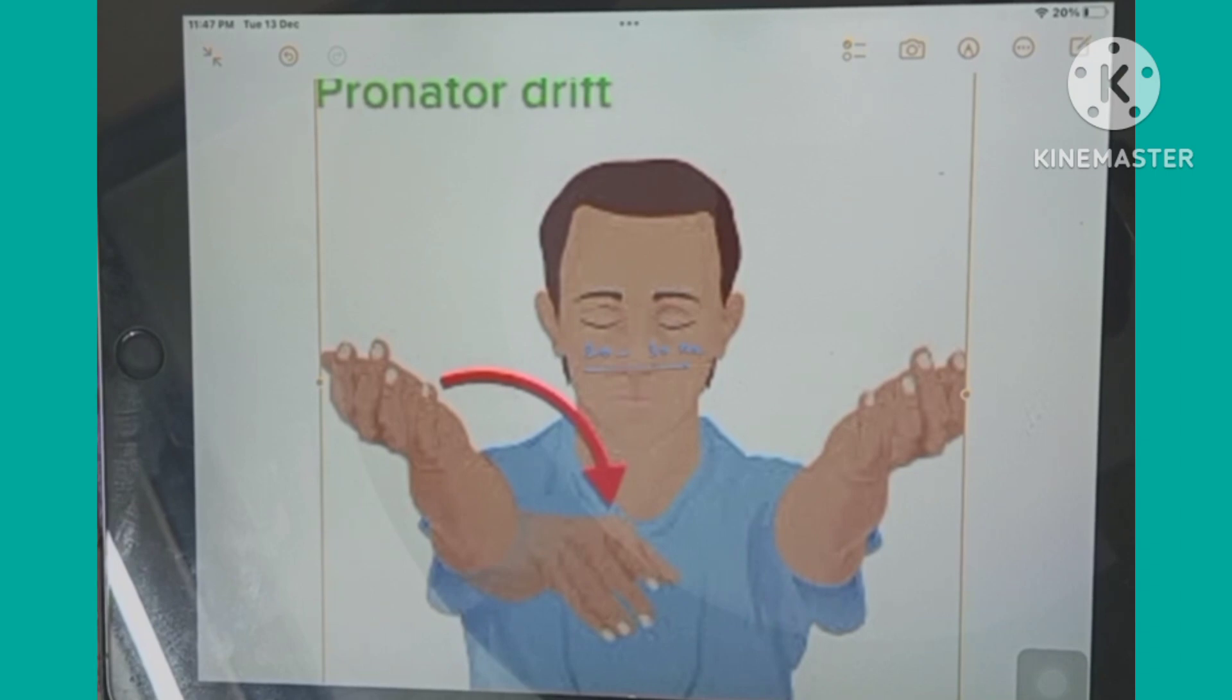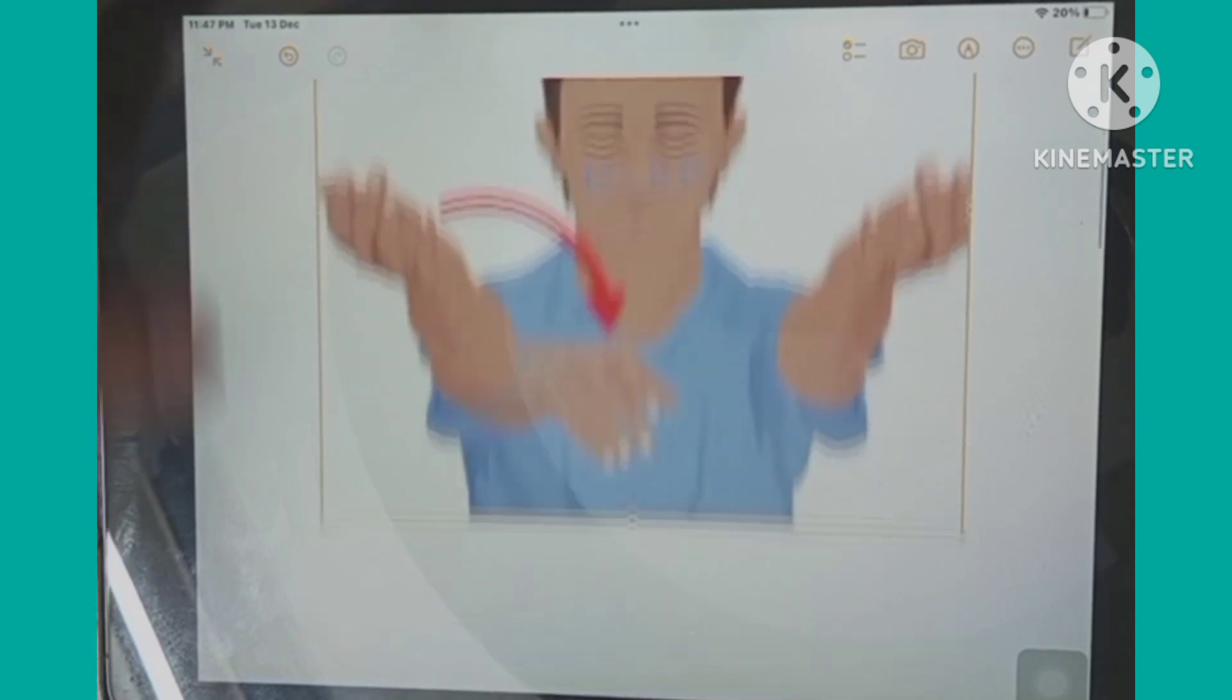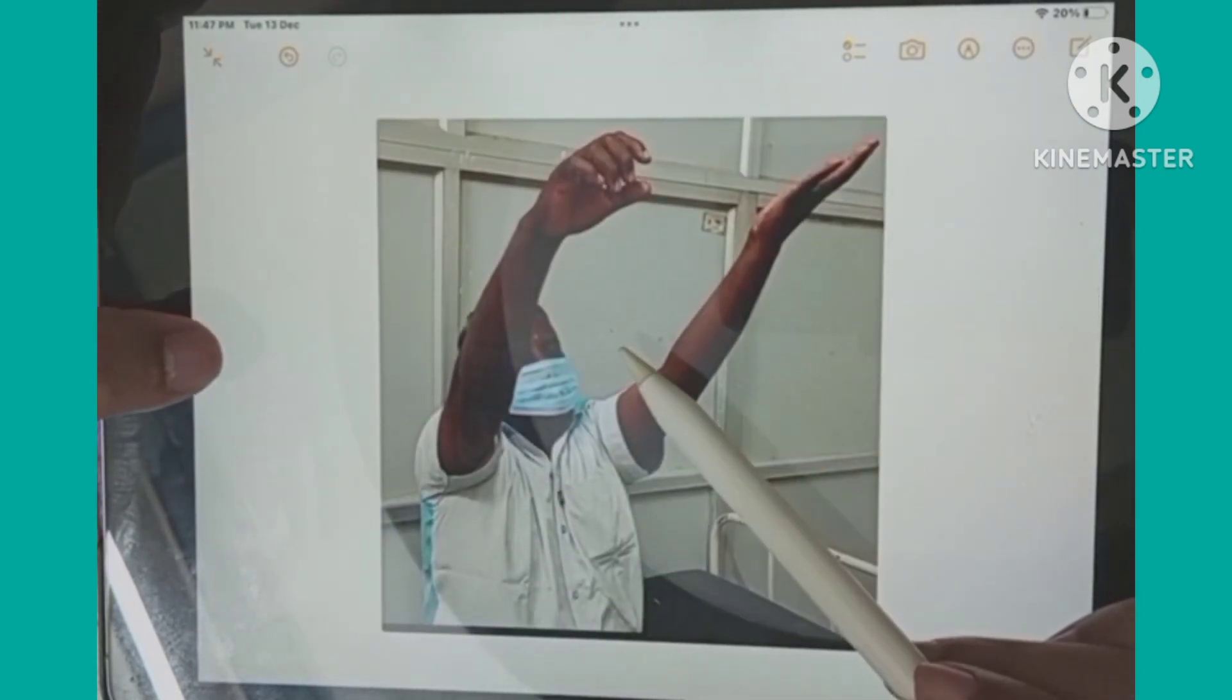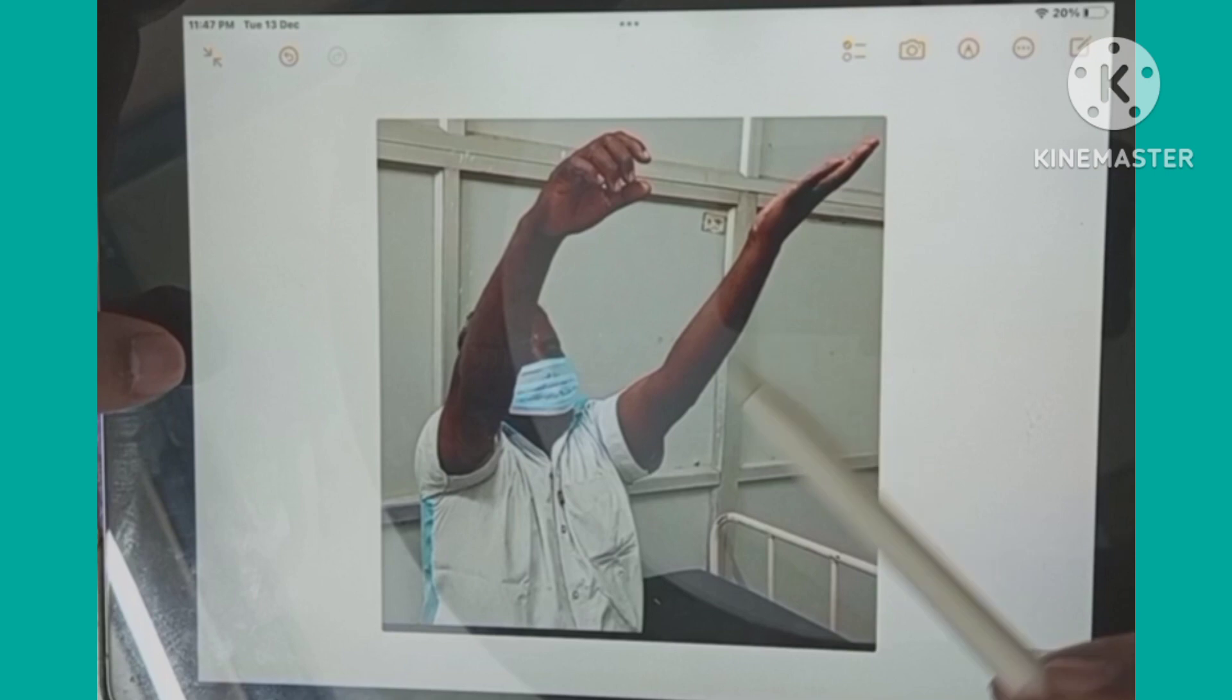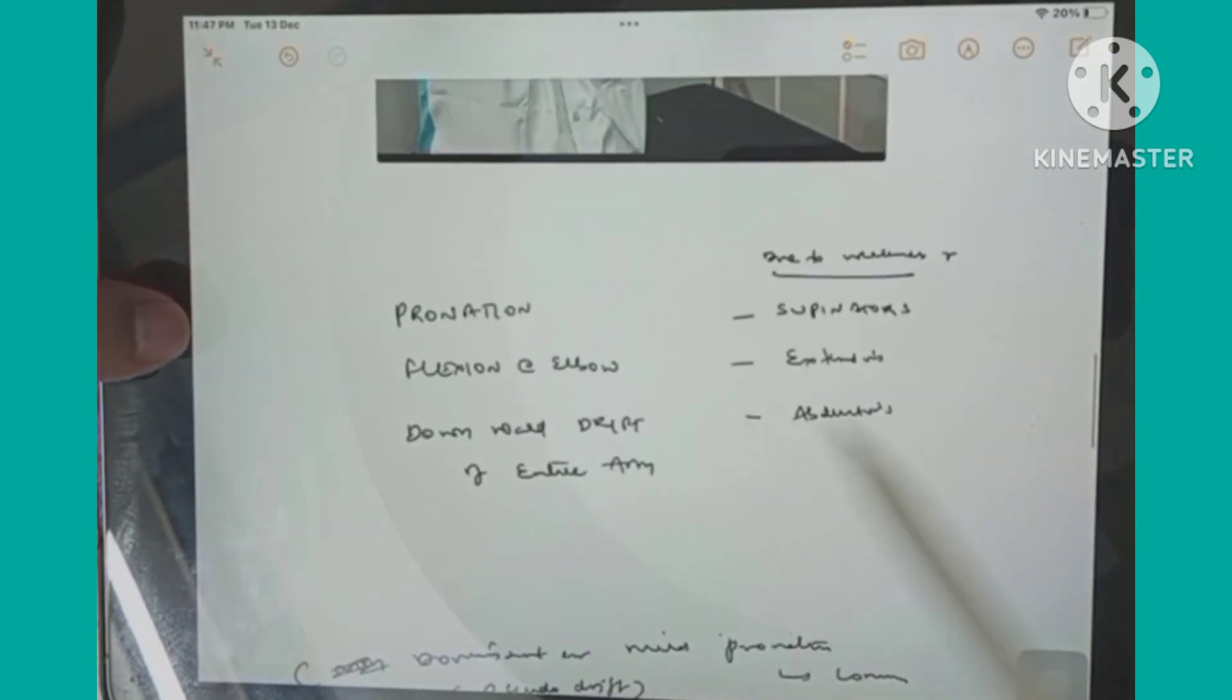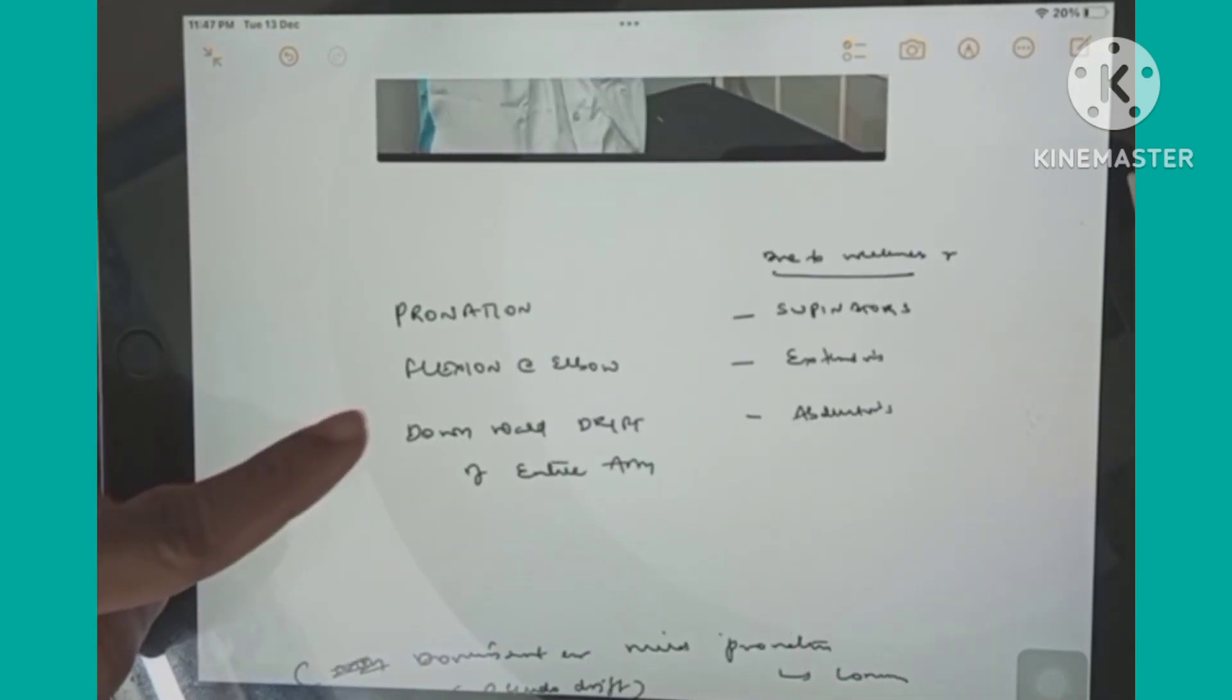So what will we see during pronation? As shown in this figure, this is a real patient. I will attach the video below. We can see in the right arm we can see the pronation and elbow flexion and downward displacement of the arm.